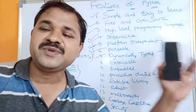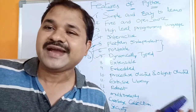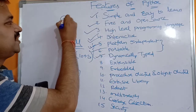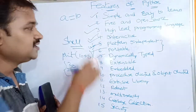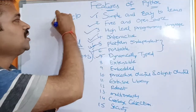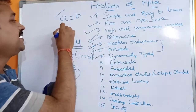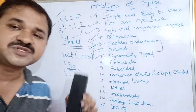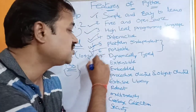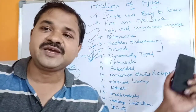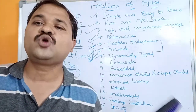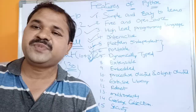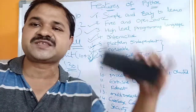The next feature is that Python is a dynamically typed programming language. Dynamically typed means there are no explicit data types in Python — you can declare a variable without specifying a data type. For example, if you write a = 10, then 'a' becomes an integer type. If you write a = 1.2, then 'a' becomes a float type. The variable automatically gets the corresponding data type based on the assigned value.